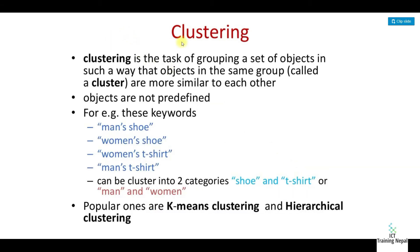Clustering groups objects — not into predefined categories. For example, the keywords are man, shoe, woman, and t-shirt. These are grouped together by the clustering algorithm.